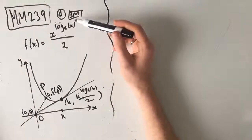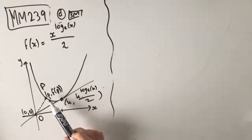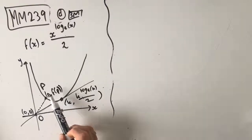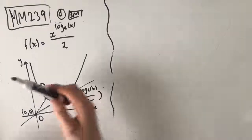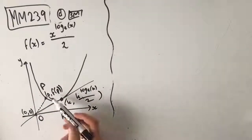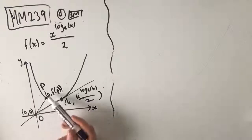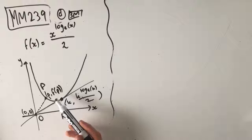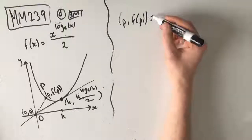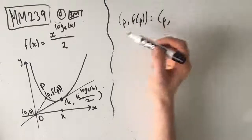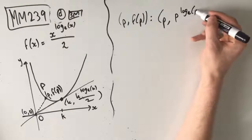Part D is a three-mark question. A point P, (P, f of P), lies on the graph of f such that the distance from the origin O to point P is at a minimum. We need to find the coordinates of point P, correct to three decimal places. A coordinate is P, f of P — and since f of x is x to the power of log e of x over 2, f of P gives us P to the power of log e of P over 2. This is our coordinate in terms of P.